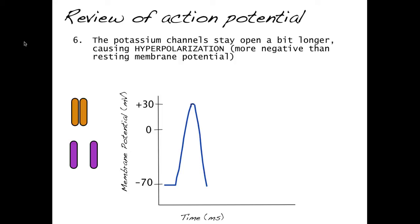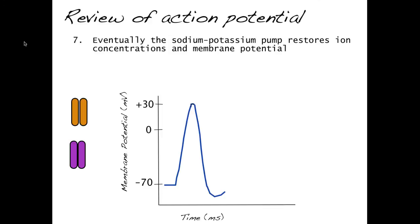We call this repolarization — the return of the membrane potential to a negative value. The potassium channels stay open a bit longer, causing hyperpolarization, making the membrane potential more negative than resting because a little bit of extra potassium leaves. Once the potassium channels close, the sodium-potassium pump can restore ion concentrations to resting conditions and return the membrane potential back to minus 70 millivolts, so that another action potential can occur.